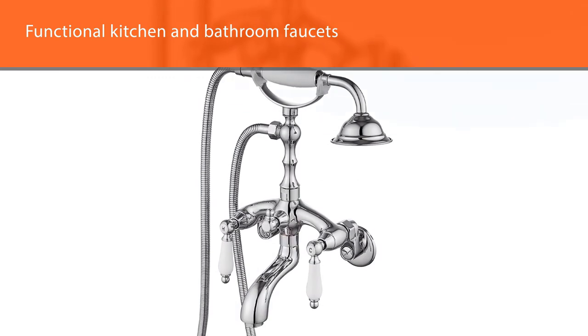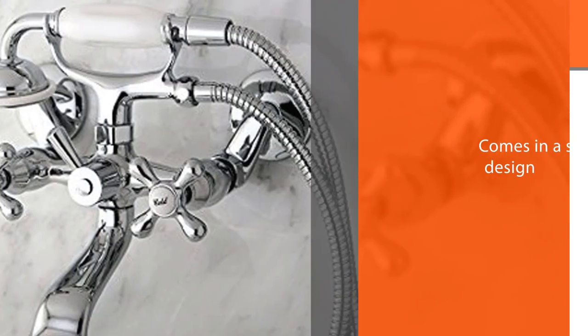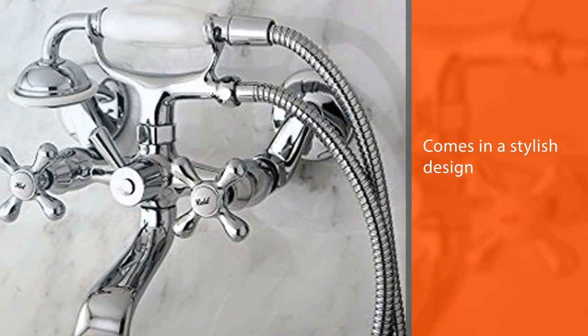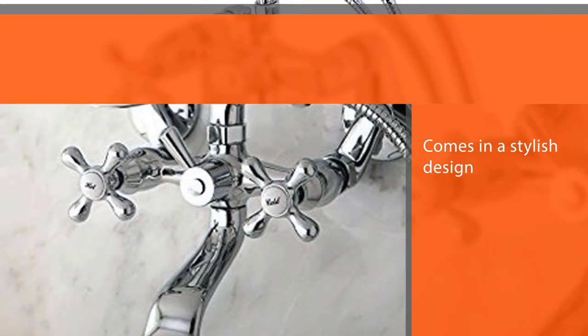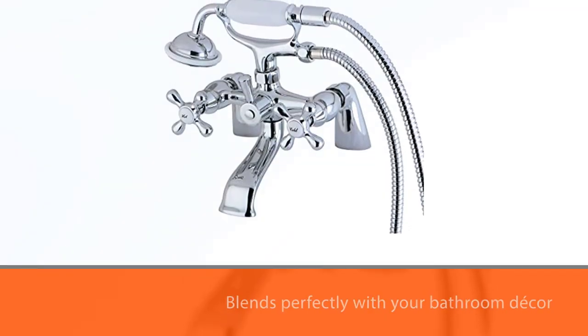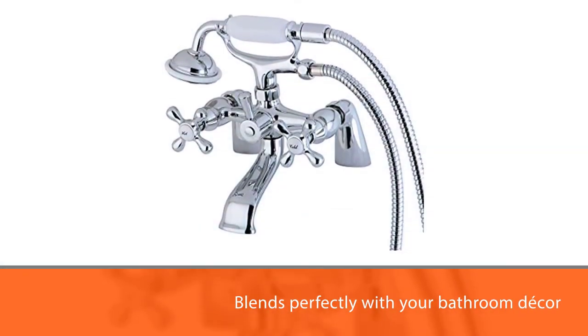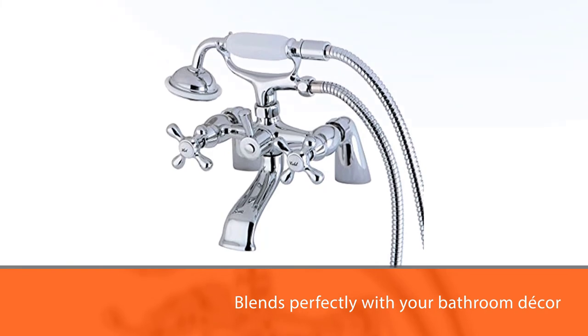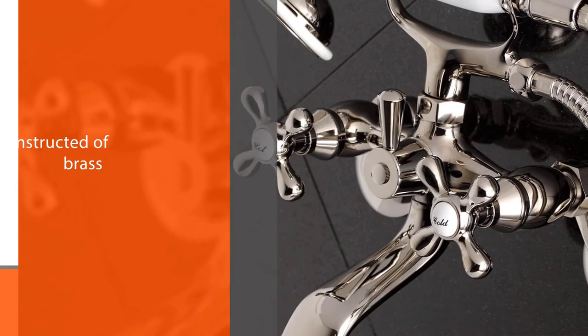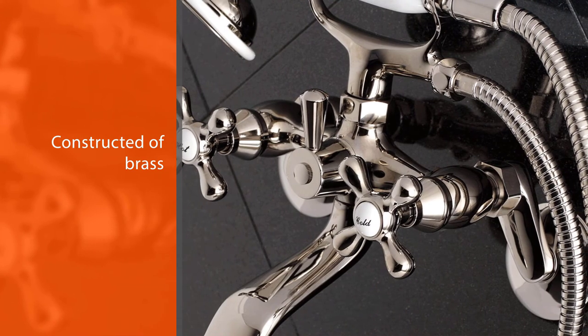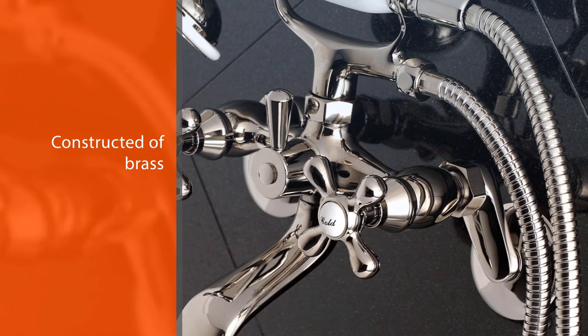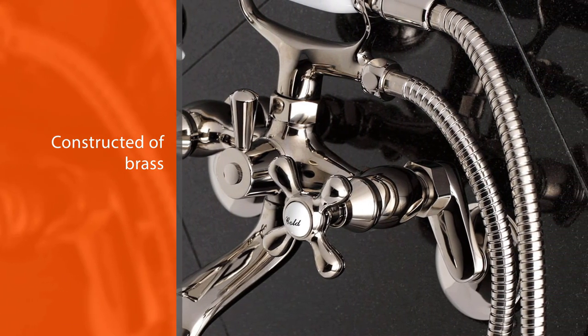Moreover, it is constructed of brass, which is the most widely used material for faucets because of its reliability, functionality, and durability. It comes in a chrome finish which is resistant to tarnishing and rust. Moreover, it is equipped with a ceramic disc cartridge that allows you to enjoy a drip-free use. For more details, click the link in the description.